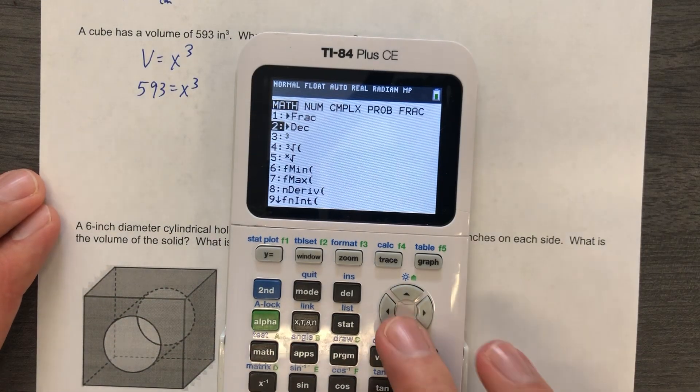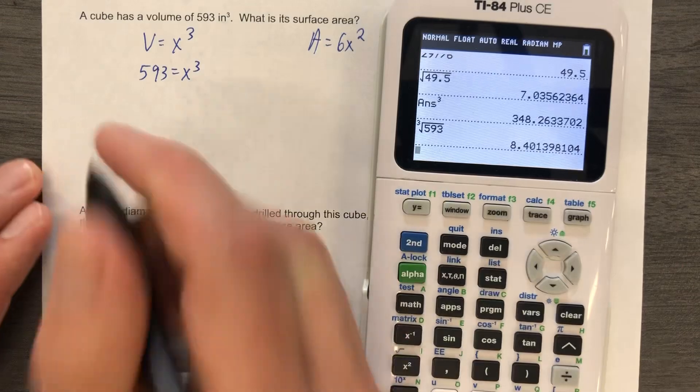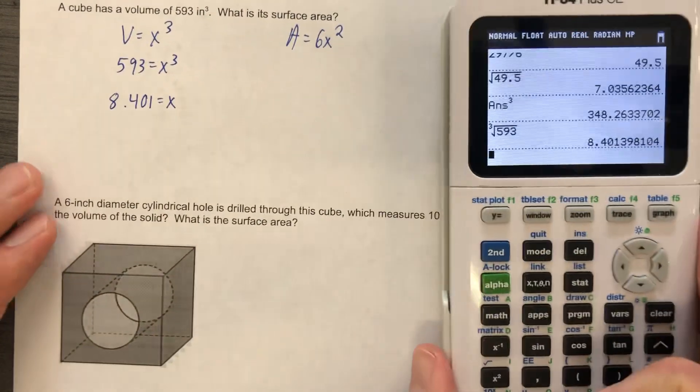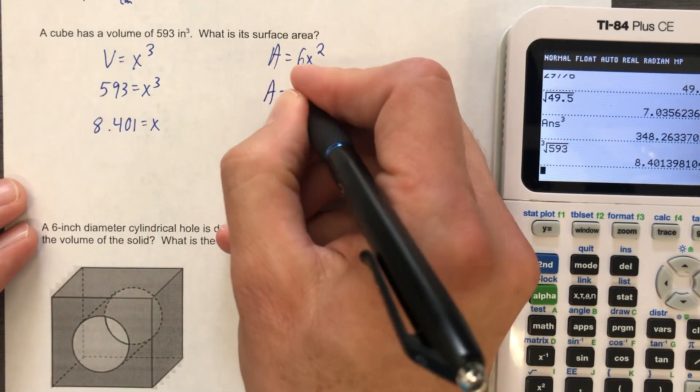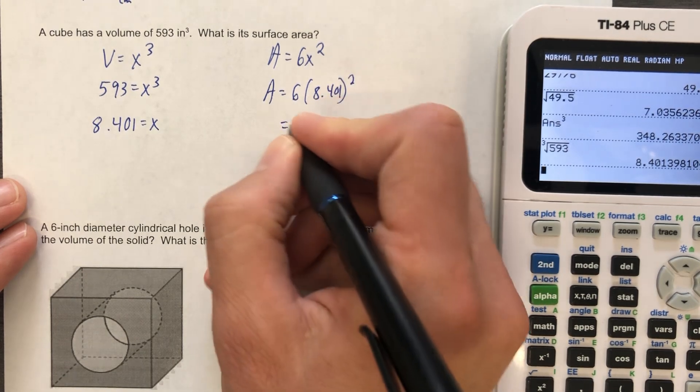That is not a perfect cube, by the way. So it's going to be gross. Oh man, that's gross. So it's highly irrational number. Highly irrational as opposed to a mildly irrational apparently. So the area is going to be six times 8.401 squared. We'll figure out what that is.